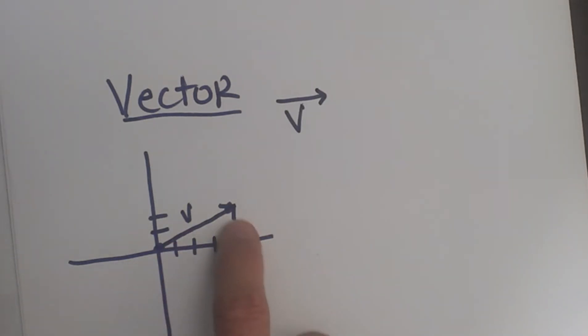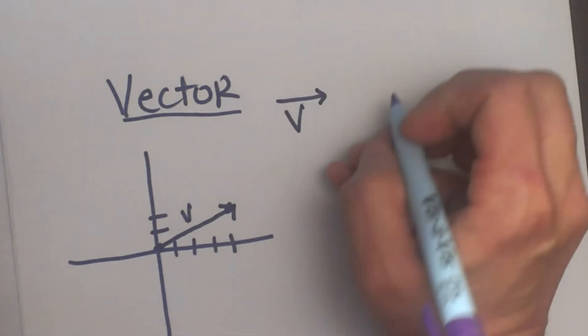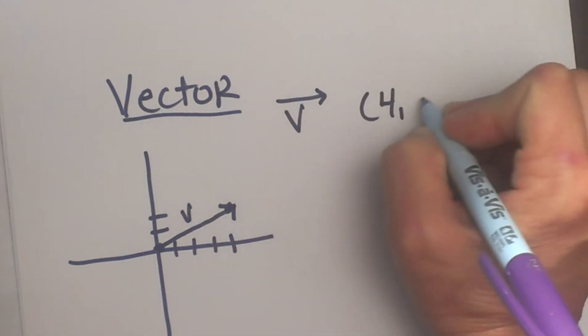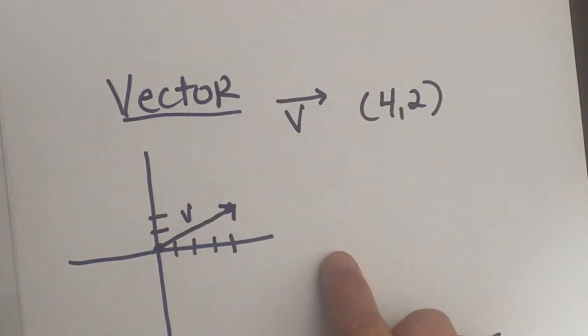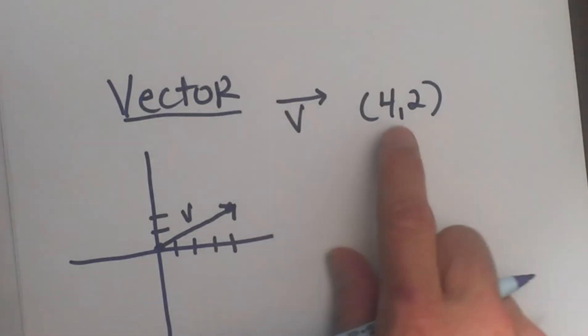Let's see how this vector is named. X is 4, which is my horizontal direction. My horizontal magnitude is 4, and my y direction is 2, so my vertical direction is 2.